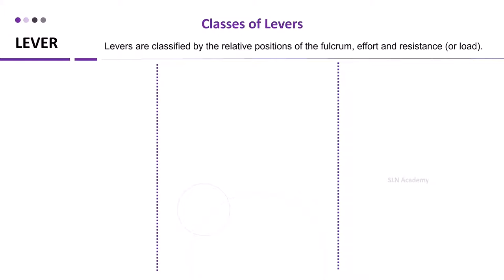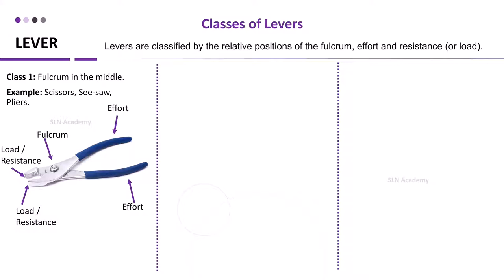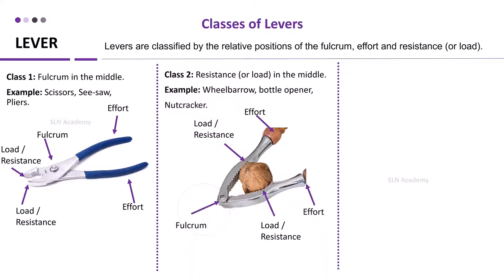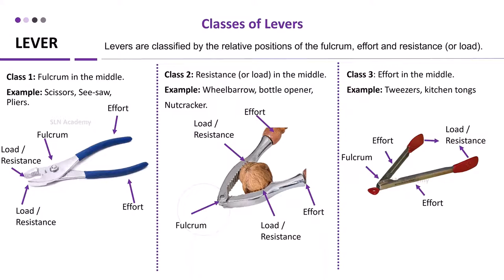Different classes of levers. Levers are classified by the relative position of the fulcrum, effort and resistance or load. In class 1 lever, fulcrum is in the middle. Example: scissors, seesaw, pliers. In class 2, resistance is in the middle. Example: wheelbarrow, bottle opener, nutcracker. In class 3 lever, effort is in the middle. Example: tweezers, kitchen tongs.